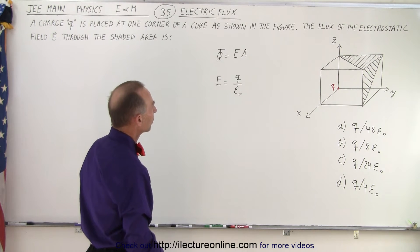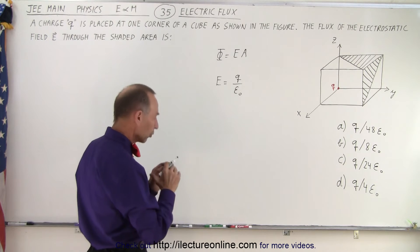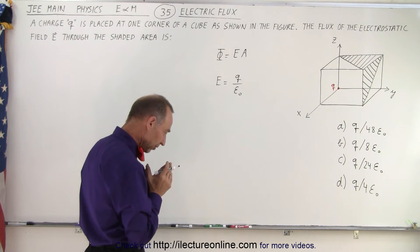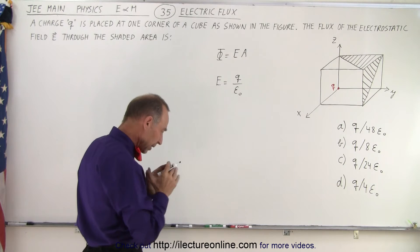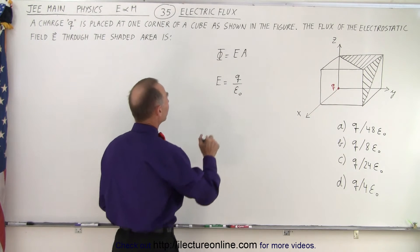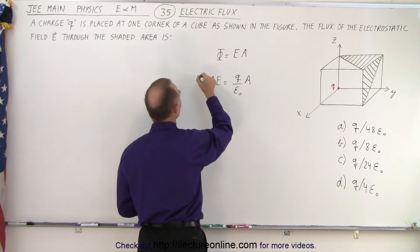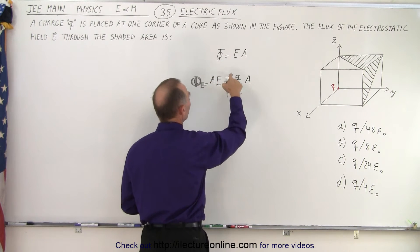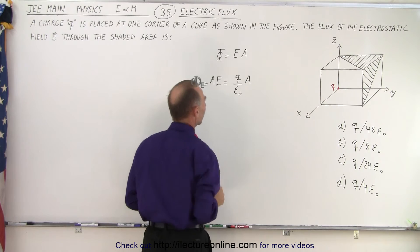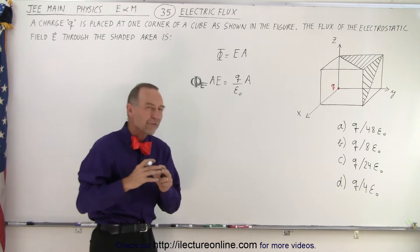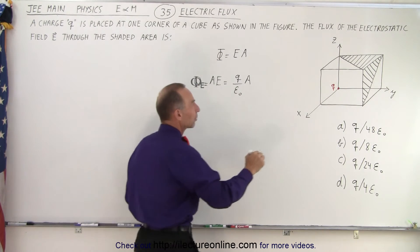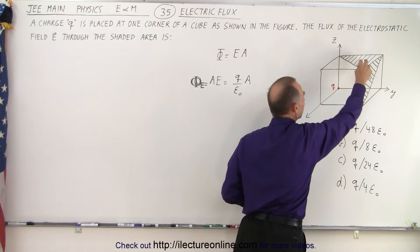So, if we then multiply that times the area, or also the idea, though, of course, is that the flux would then be area times electric field. So if we multiply both sides by the area, then we have the flux is equal to Q over epsilon sub naught times the area. But now we're looking for the fraction of that flux that goes to the shaded area right here.